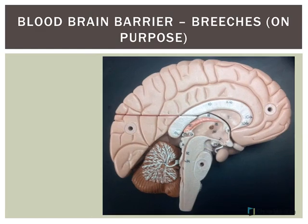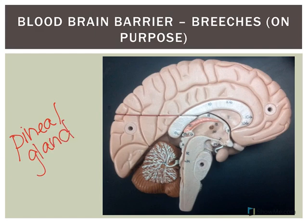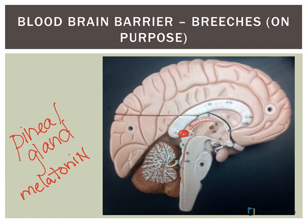Another location where the blood-brain barrier is not intact is the pineal gland — a pine cone-shaped structure that produces melatonin, a hormone that regulates sleep-wake cycles. Look for another recording that discusses clinical correlations associated with the meninges and cerebral spinal fluid.